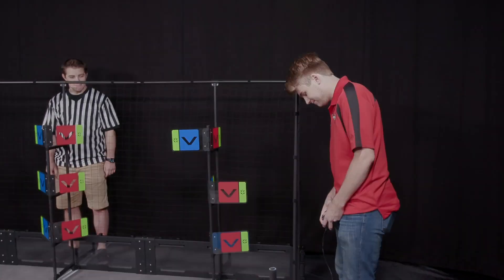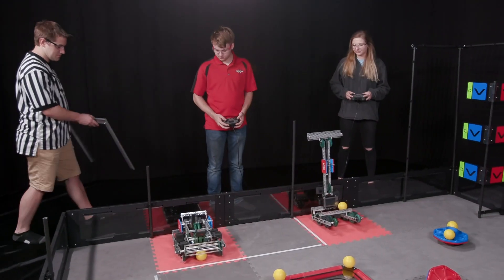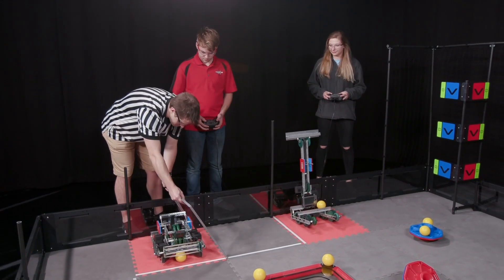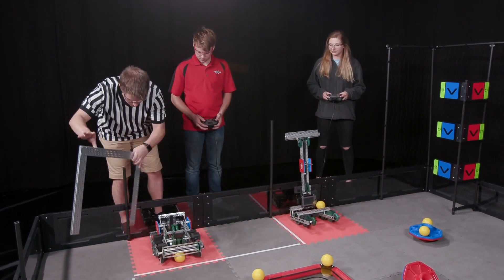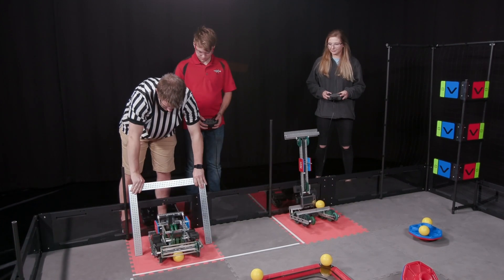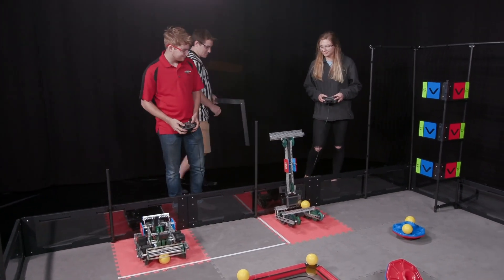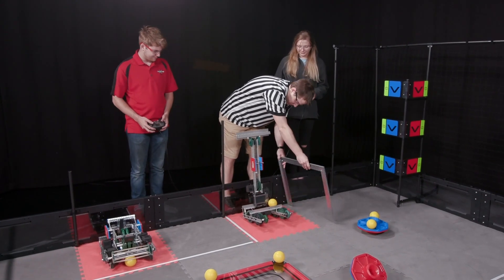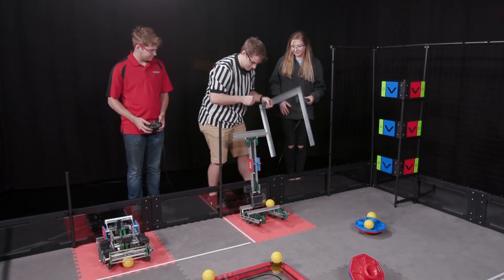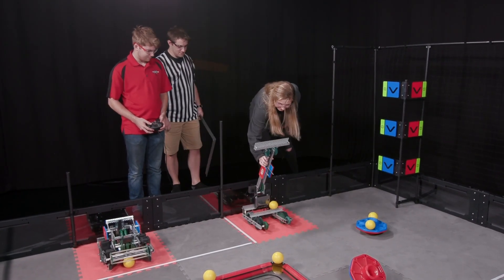Now returning to point number two, making sure robots are set up correctly. There are a few things to check here. Per rule G3, each robot must start the match in a volume smaller than 18 inches wide by 18 inches long by 18 inches tall. If a robot looks like it's extending out too far, use a sizing tool to measure them.